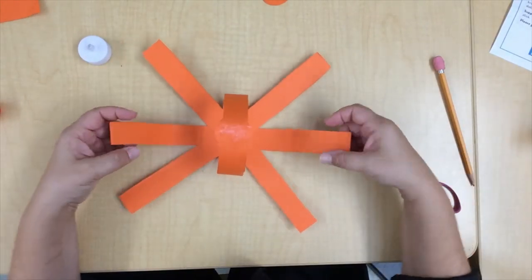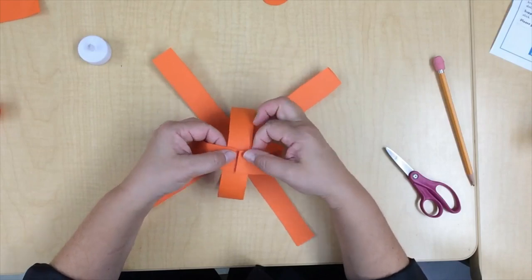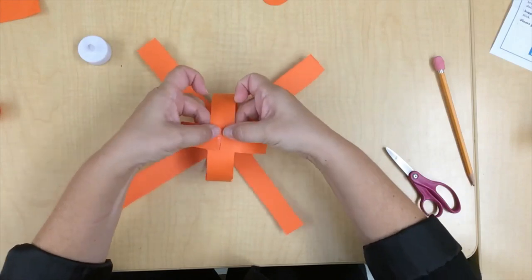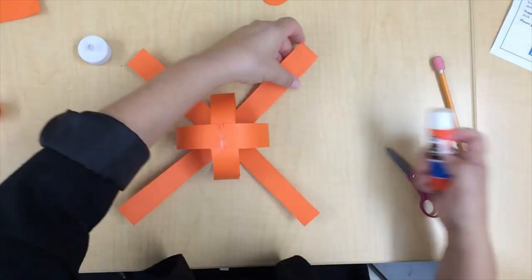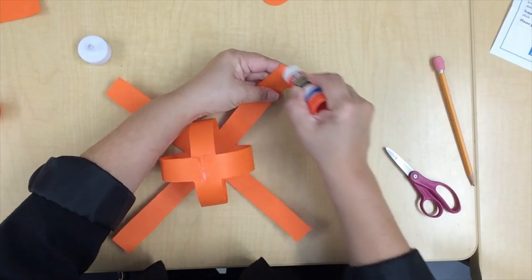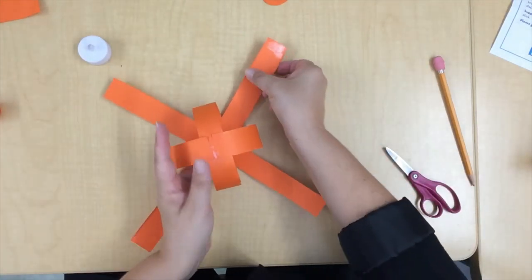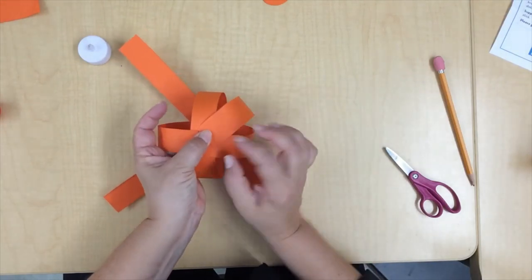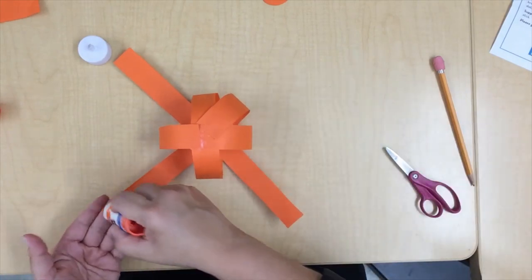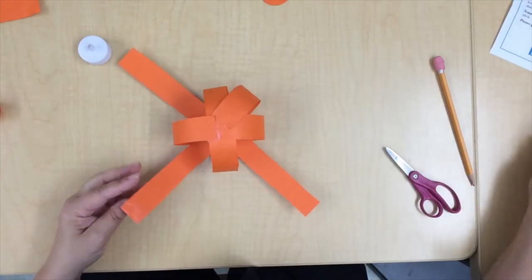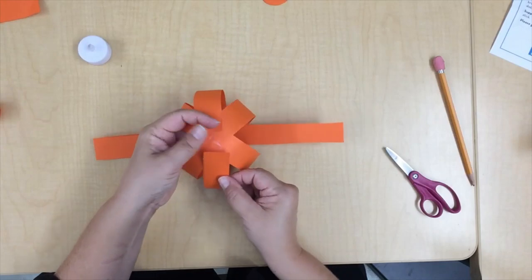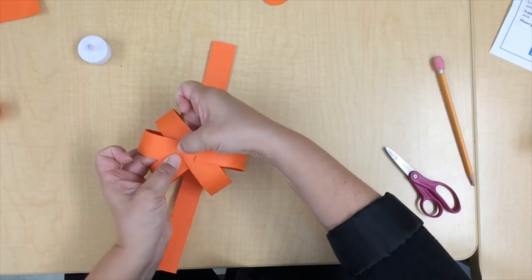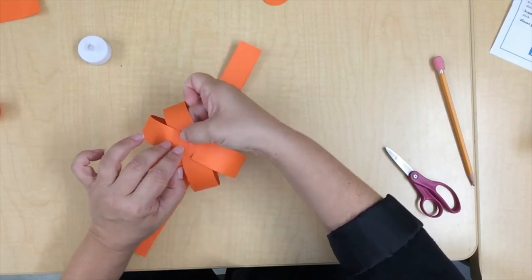So now we're going to do these two. You might have to hold it in place just a little bit until it adheres. Put some glue on the end of the paper to make sure it sticks. And some more glue. Hold it for a minute and make sure it sticks. Your fingers might get a little sticky too.